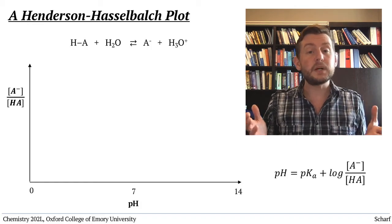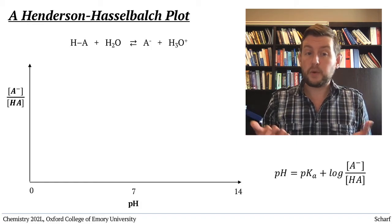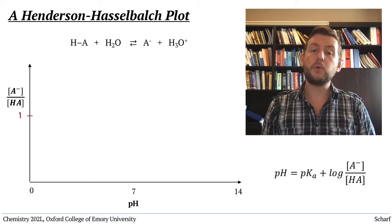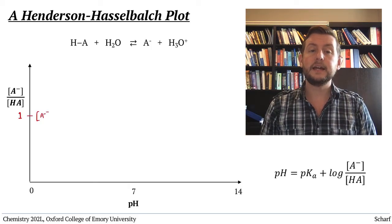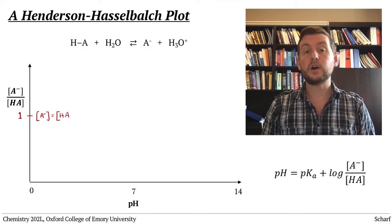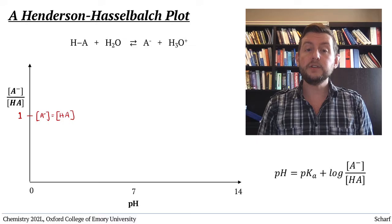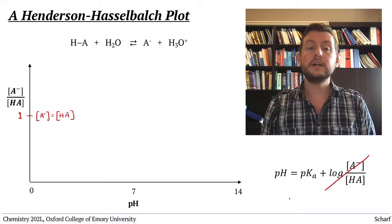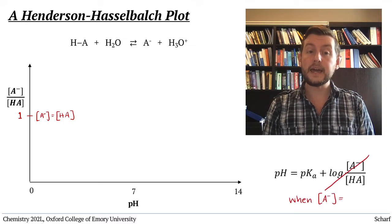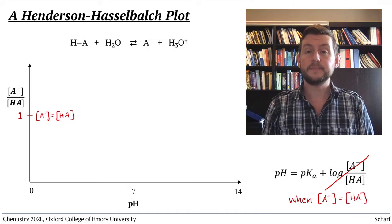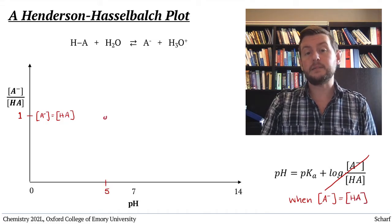To see what these plots look like and what they tell us, let's start with the point where the conjugate acid and conjugate base concentrations are equal. When this is true, the Henderson-Hasselbalch equation tells us that pH equals the pKa of the acid. For a carboxylic acid, that's about 5.